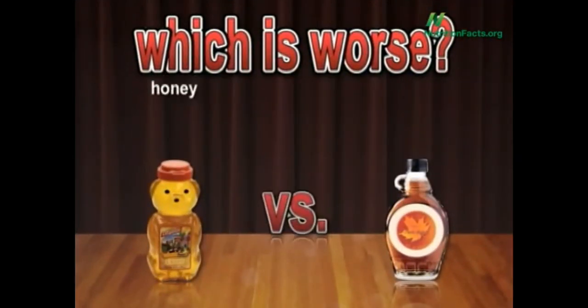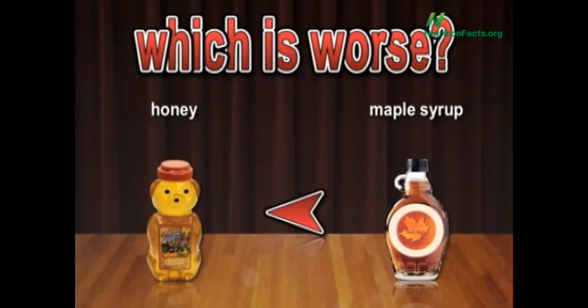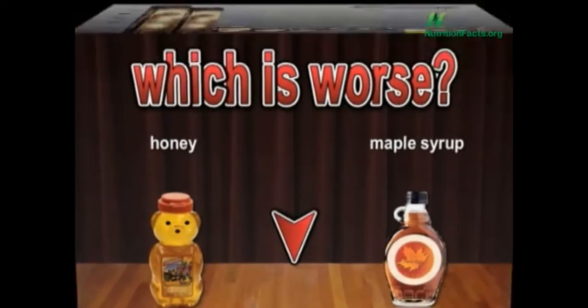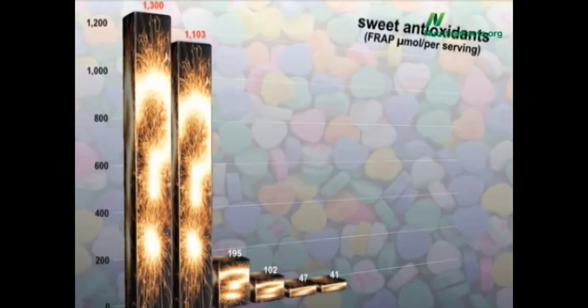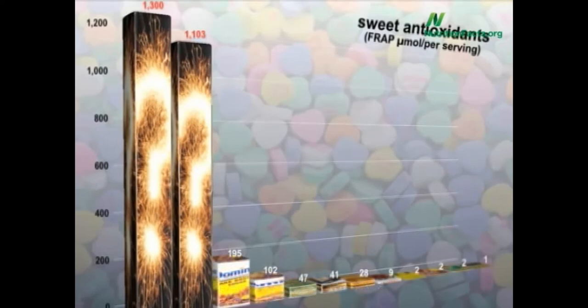Which is worse? Honey or maple syrup? Or the same? Well, they can't be the same, right? I mean, there aren't two bars left the same size. Both still sugar, but honey beats out maple syrup. In fact, all these are basically just sugar, whether dark, light, raw, or turbinado.